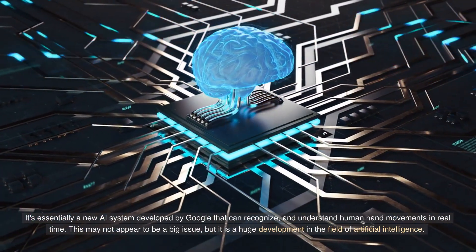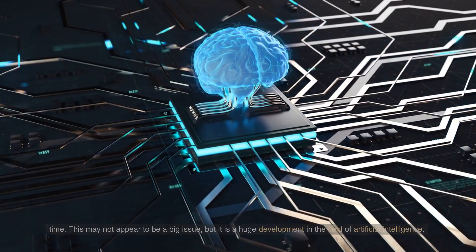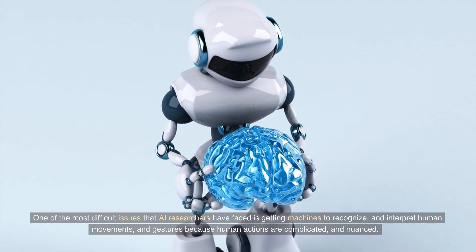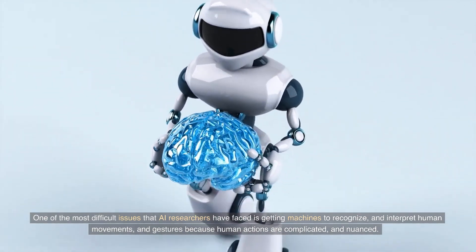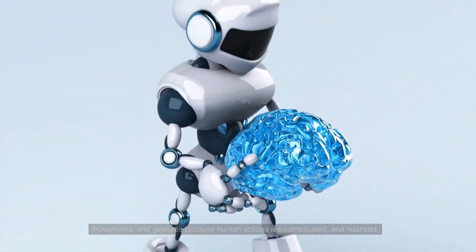It's essentially a new AI system developed by Google that can recognize and understand human hand movements in real time. This may not appear to be a big issue, but it is a huge development in the field of artificial intelligence. One of the most difficult issues that AI researchers have faced is getting machines to recognize and interpret human movements and gestures because human actions are complicated and nuanced.